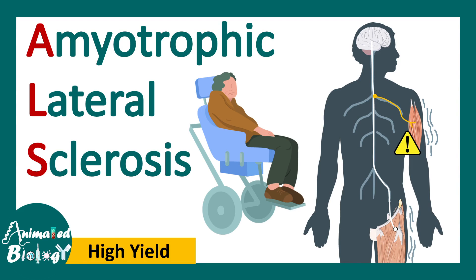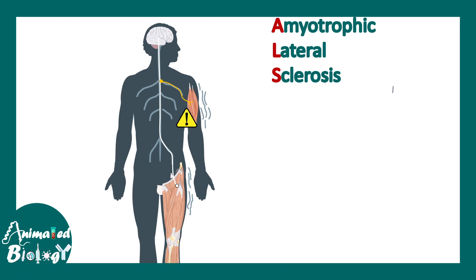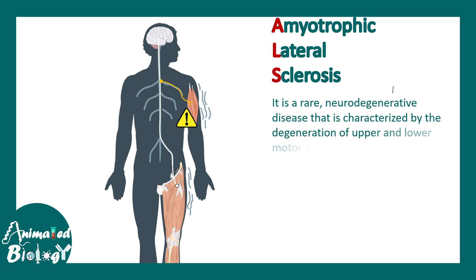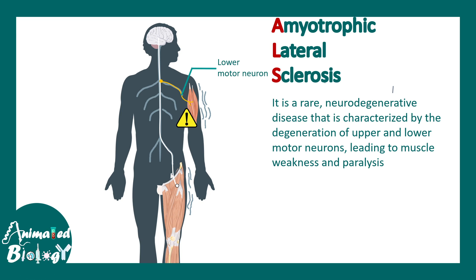In this video we'll be talking about amyotrophic lateral sclerosis or ALS — a high-yield topic for USMLE Step 1. ALS is a neurodegenerative disease characterized by degeneration of upper and lower motor neurons, along with skeletomuscular defects which lead to weakness and paralysis of the muscles. Both the upper motor neuron tract and the lower motor neuron tract can be affected in this disease.